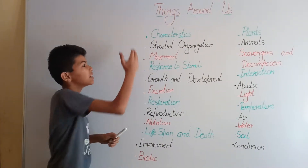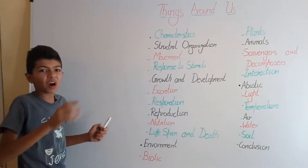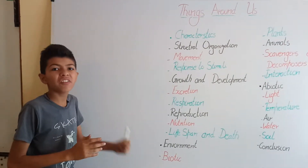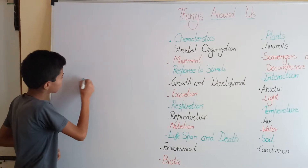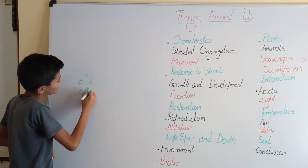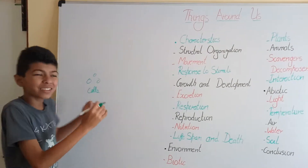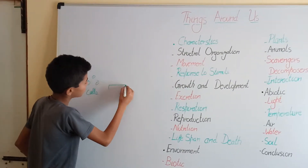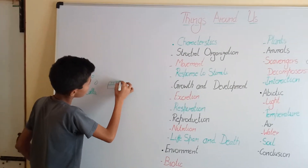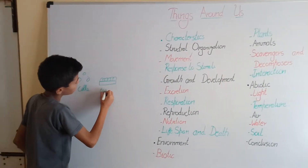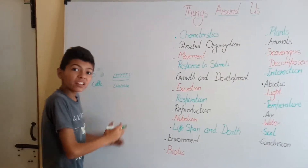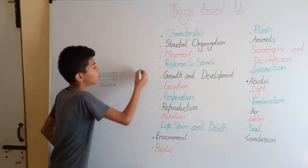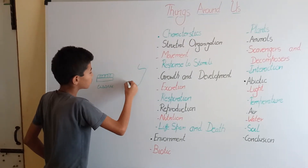The first characteristic is structural organization. The bodies of all living organisms are made up of the smallest living structure called the cell. When a group of cells does a particular work, it is said to be a tissue. When groups of tissues do a particular work, they form an organ.